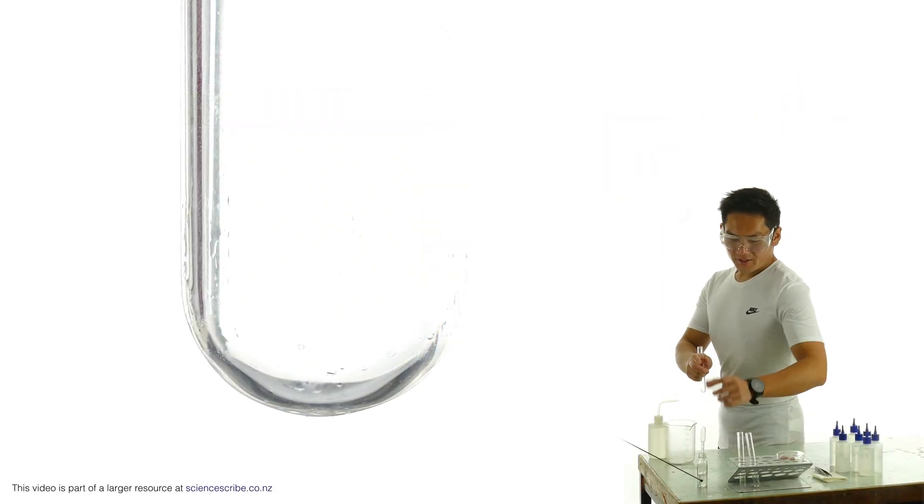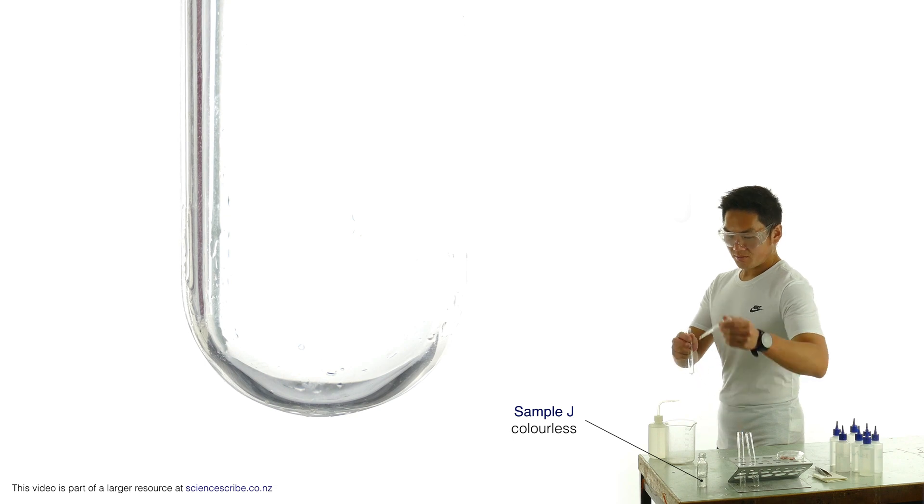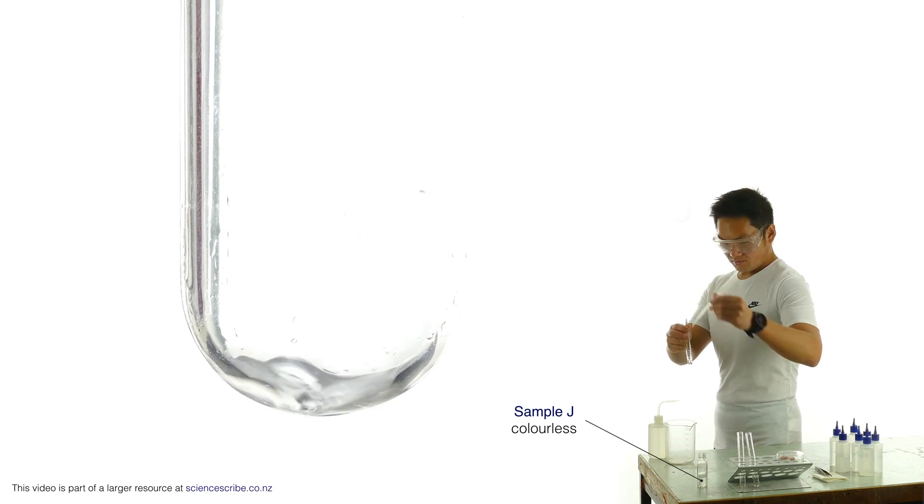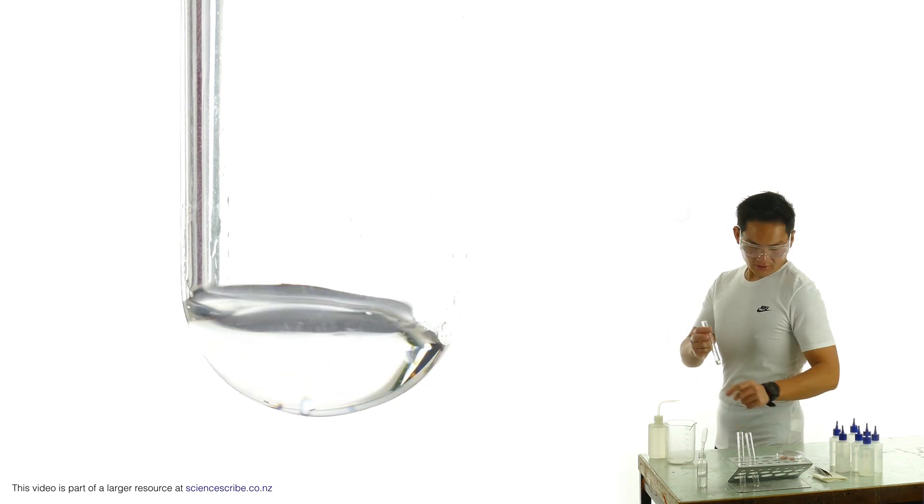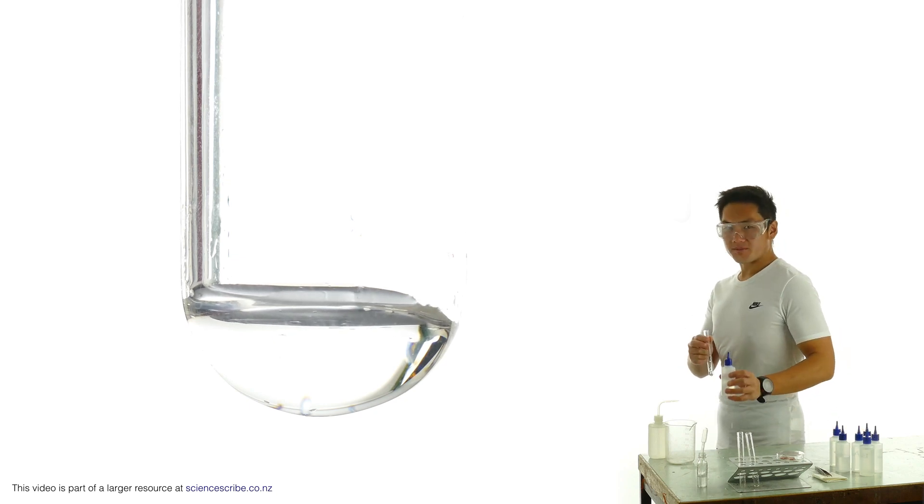Collecting a fresh sample of J. It looks clear and colourless. Adding two drops of sodium hydroxide.